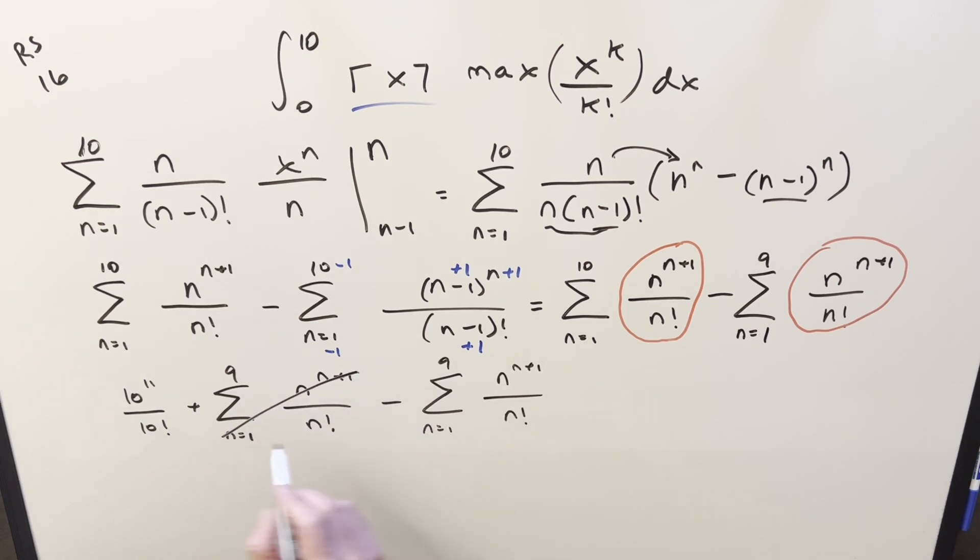And then these two things, these are identical. So this cancels to 0. And what we're left with is 10 to the 11 over 10 factorial.